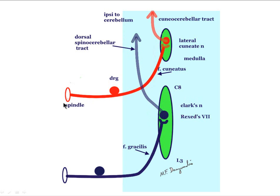Above C8, spindle and GTO information travels in the fasciculus cuneatus of the posterior columns — because this is arm and upper body stuff. It finds the lateral cuneate nucleus, which sends out fibers forming the cuneocerebellar tract. These two tracts are in effect the same tract carrying the same information.